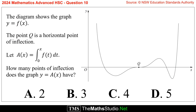Question 10. The diagram shows the graph y equals f of x. The point q is a horizontal point of inflection. Let a of x equal the integral from 0 to x of f of t dt. How many points of inflection does the graph y equals a of x have?